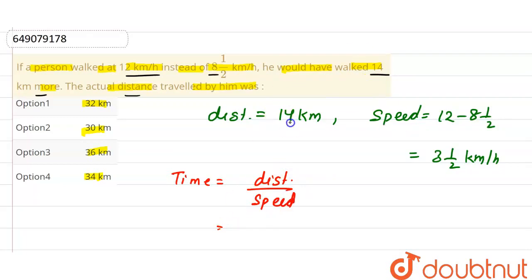The distance is 14 km and the speed difference is 3½ km per hour, so what is the actual distance?